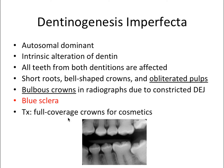Blue sclera is a very important systemic sign — you see the eyes shaded blue — and I actually got a test question on this. Blue sclera is associated with osteogenesis imperfecta, which can be closely connected to dentinogenesis imperfecta. So whether they ask about dentinogenesis or osteogenesis imperfecta, think blue sclera right away. Treatment is the same as amelogenesis imperfecta: full coverage crowns for cosmetics.